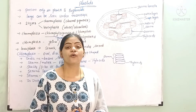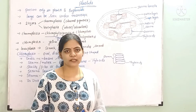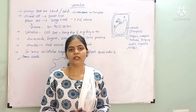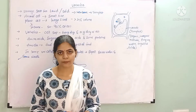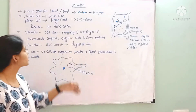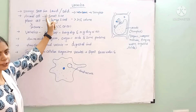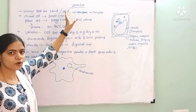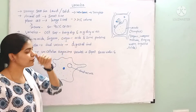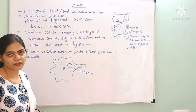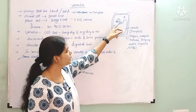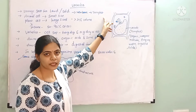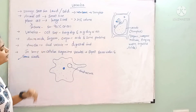With this we have completed plastics. In the next video we are going to study about vacuoles. Vacuoles are storage sacs of the cell — they store liquids and solids. They are membrane-bound structures, and the membrane surrounding vacuoles is called the tonoplast.